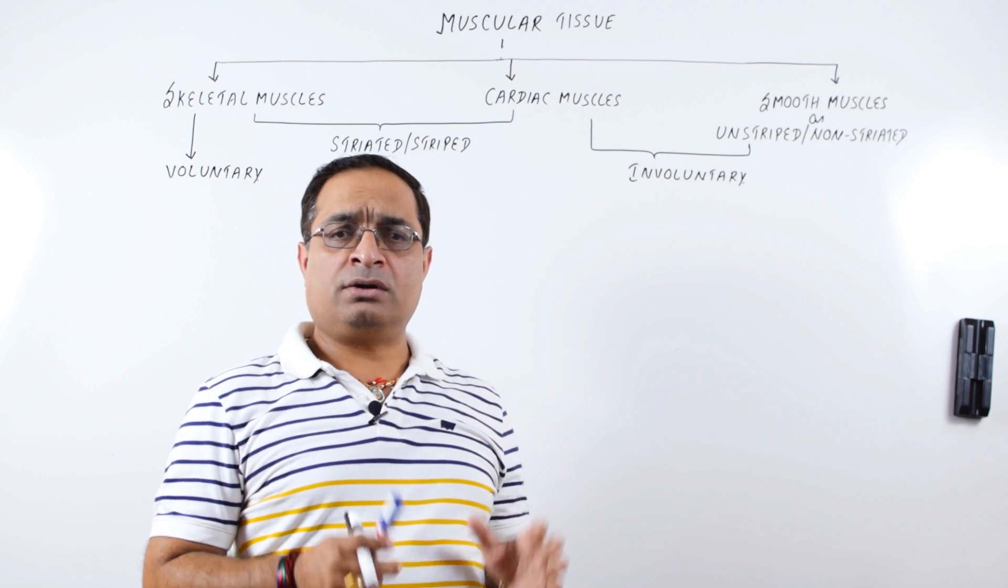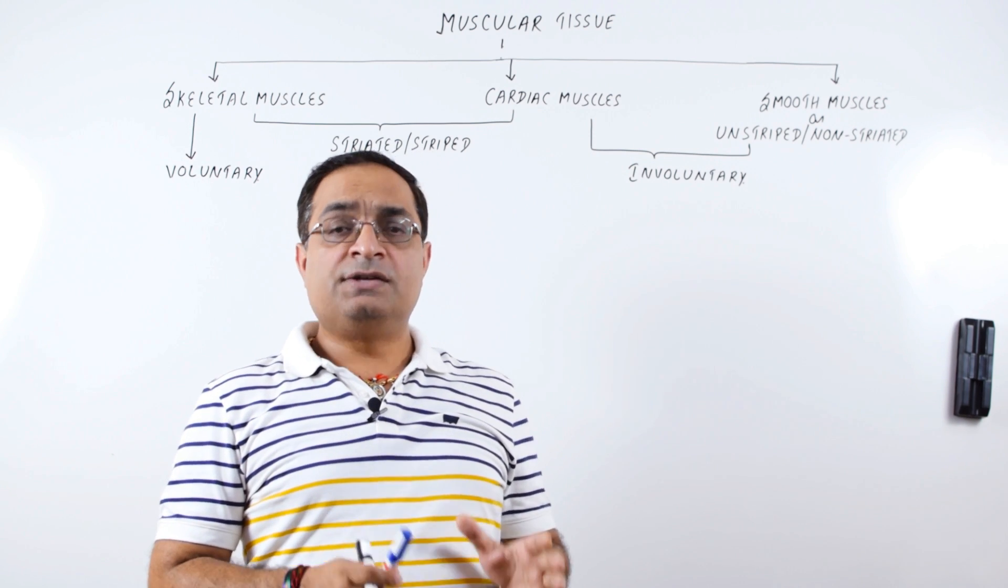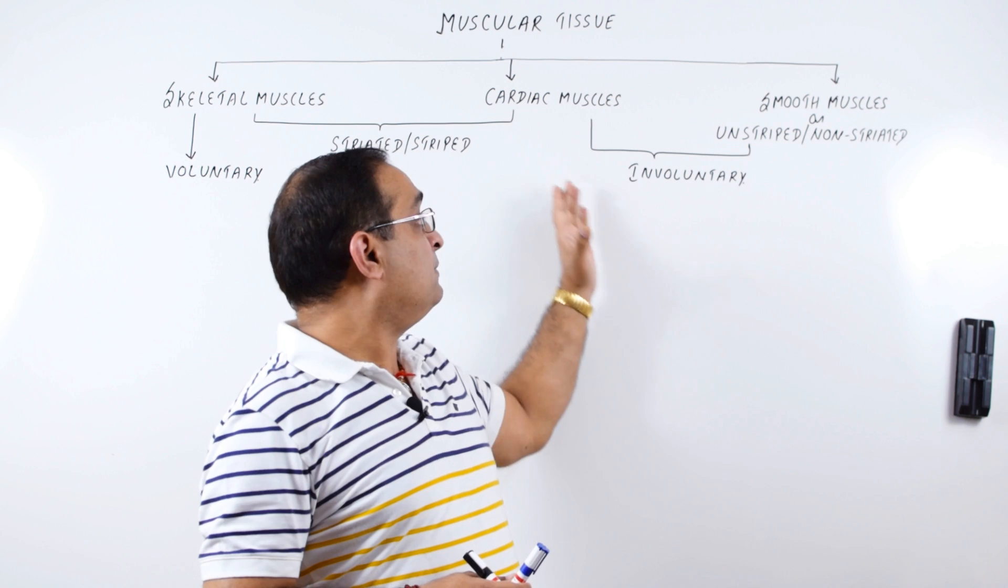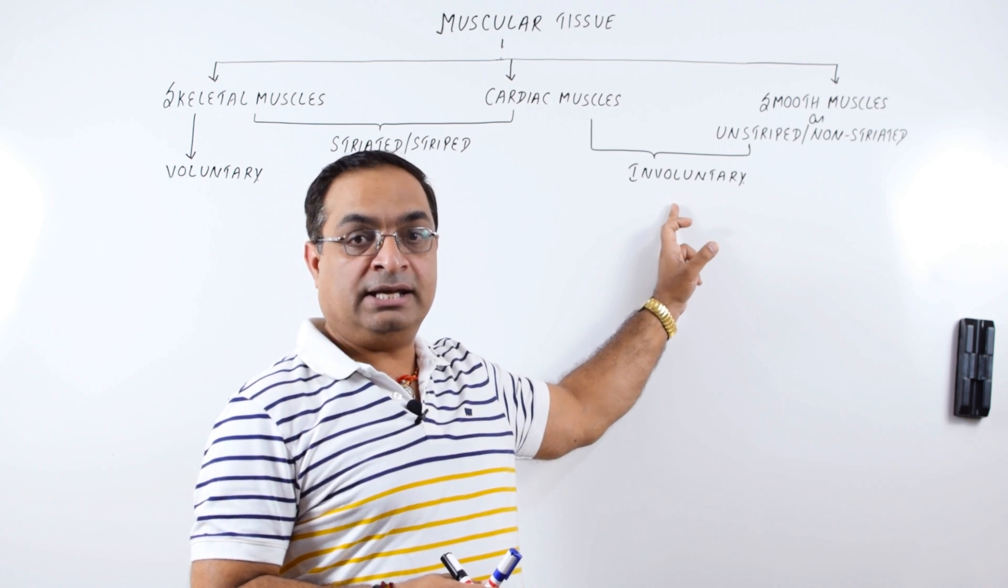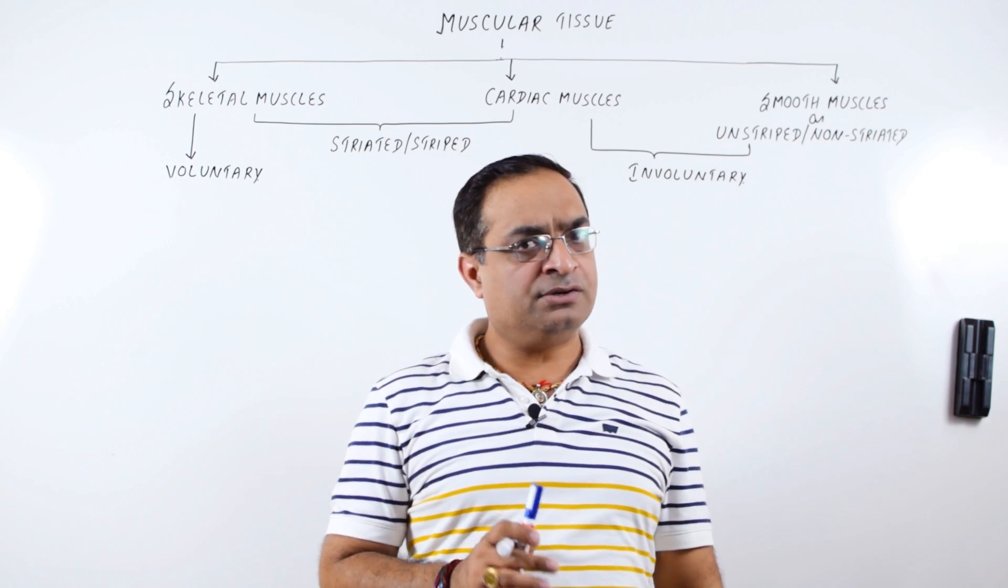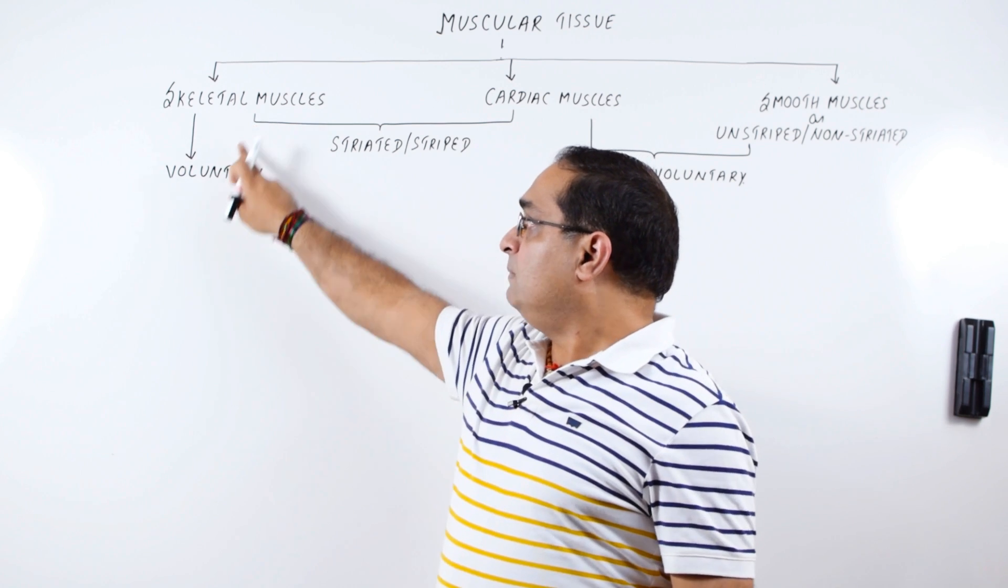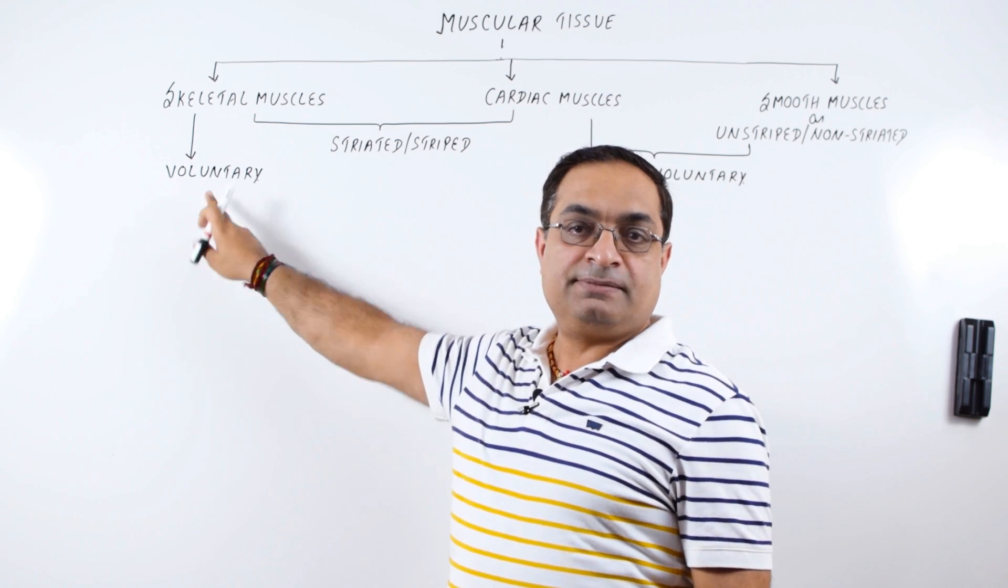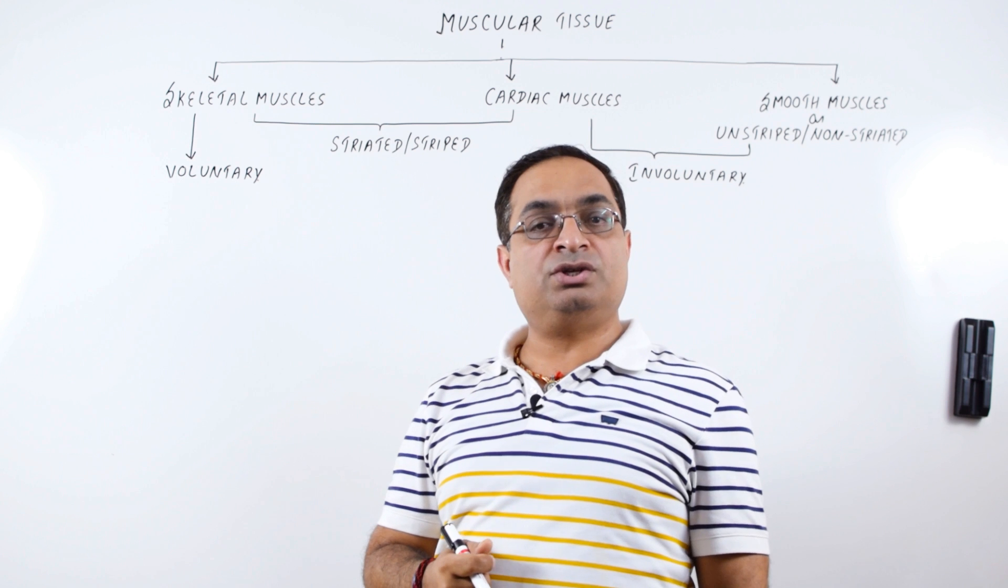As far as their control or regulation is concerned, Smooth Muscles as well as Cardiac Muscles are involuntary. That means they are not under your conscious control. Skeletal Muscles are voluntary muscles, that means they are under your conscious control.